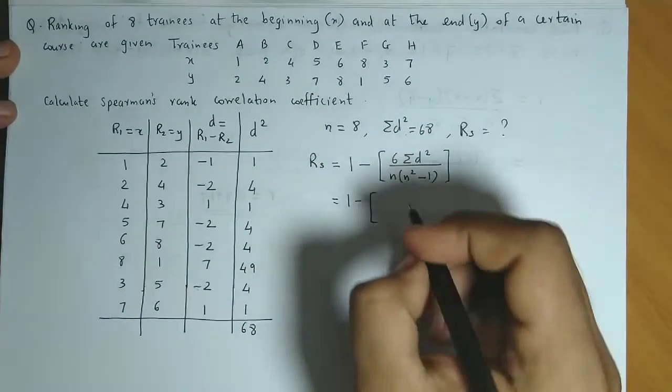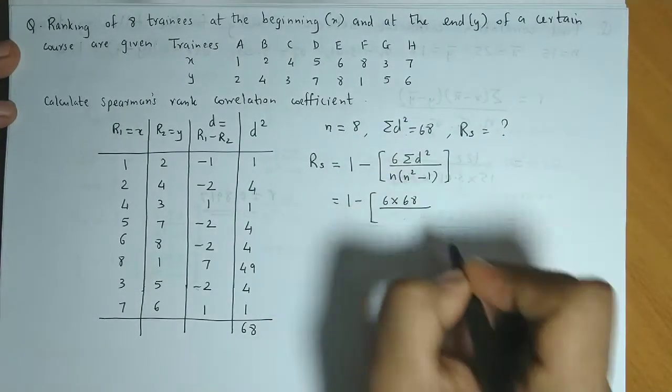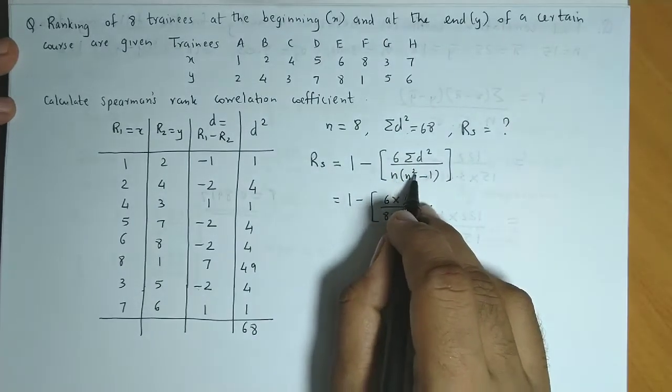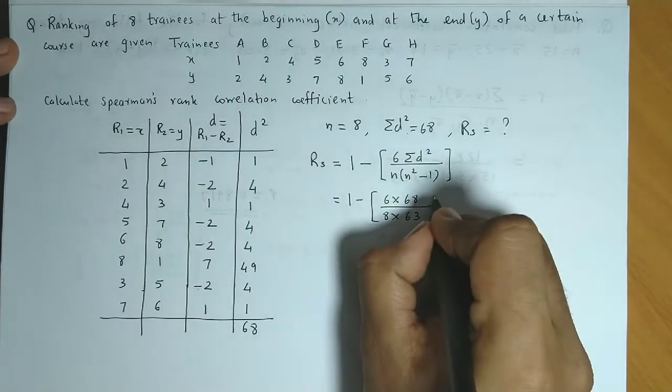Now let us substitute all these values. So we get 1 minus 6 times 68, N is 8, into 8 square is 64 minus 1, so that is 63.